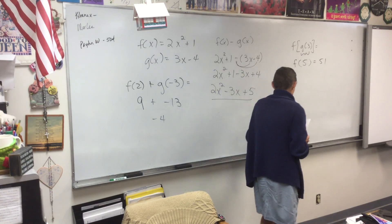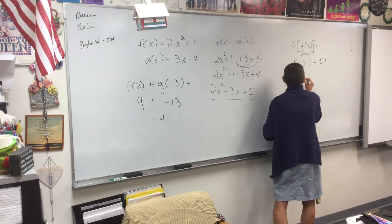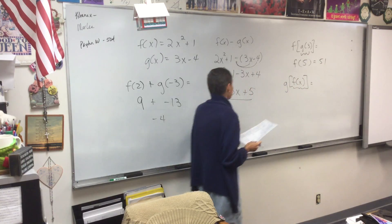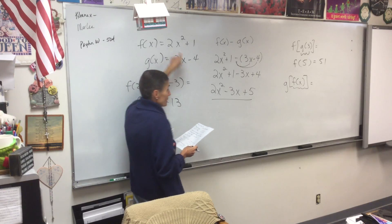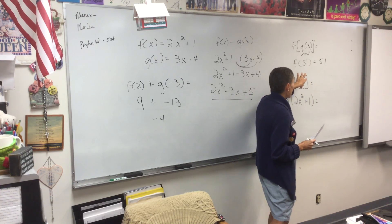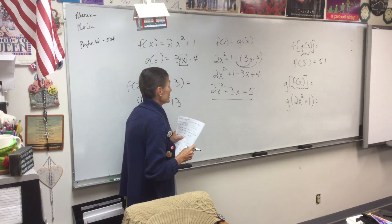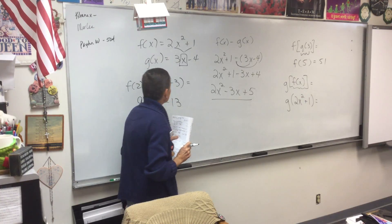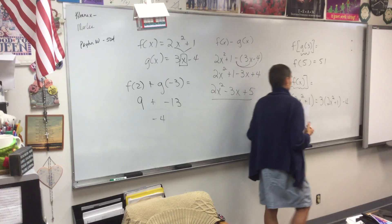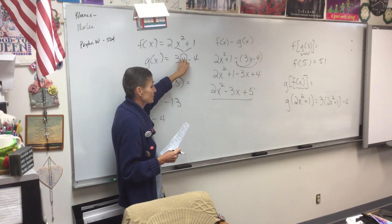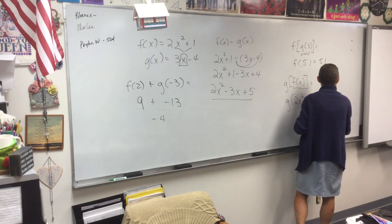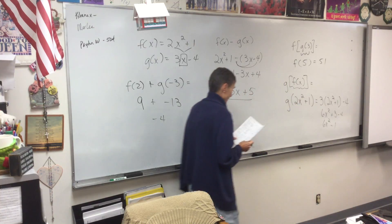What's the last one? g of f of x. This is what we talked about on our quiz. What does f of x equal? 2x squared plus 1. So I'm finding g of 2x squared plus 1 - in other words, I am plugging f into g. So I have 3 times the quantity 2x squared plus 1, minus 4. That's 6x squared plus 3 minus 4, so 6x squared minus 1 is your final answer.